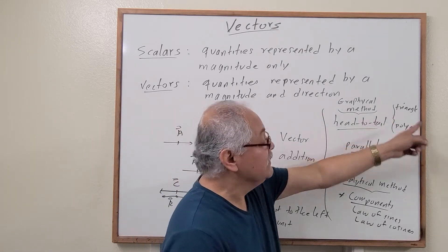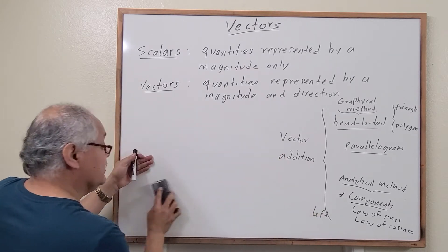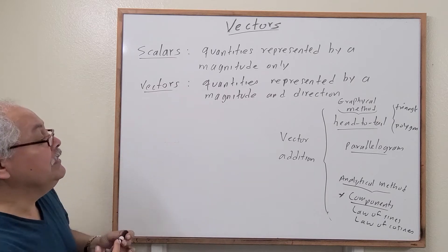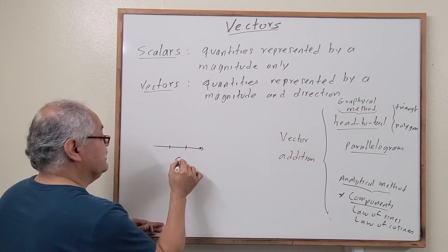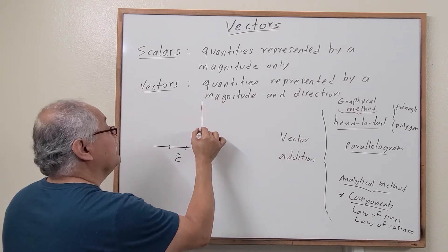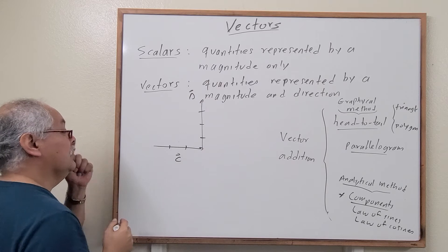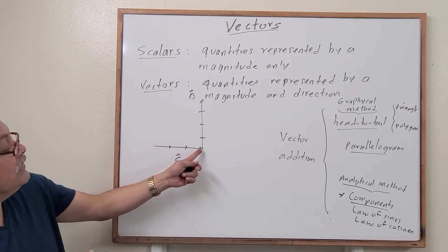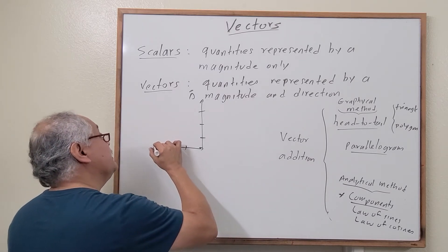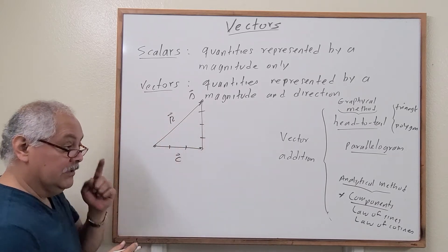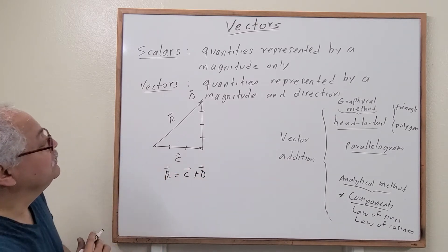Now let's go to the triangle technique. Imagine we have vector C with 3 units and vector D with 4 units pointing in different directions. Using head-to-tail, place the tail of D at the tip of C. The resultant is the vector drawn from the tail of the first to the tip of the last — vector R equals C plus D.